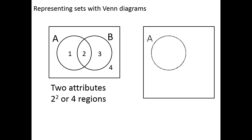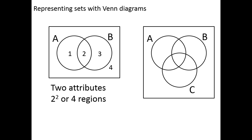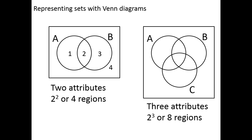Now if we have a universal set divided into 3 attributes, A, B, and C, there are 2³ = 8 regions we can identify. Some regions are contained in only one circle, some are in 2 circles, there's a region — region 5 here — contained in all 3 circles, and there's even a region — region 8 — that's contained in none of the circles. Anything in region 8 would have none of those 3 attributes.